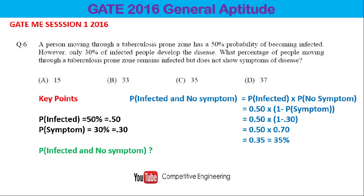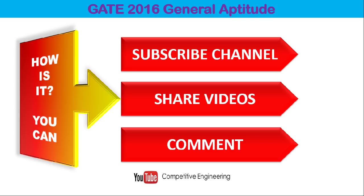So the probability of being infected and showing no symptom is 35%, making the correct answer option C. This is a GATE 2016 basic probability question. You can watch our probability lecture for a better understanding. Thank you for watching — please subscribe, share the videos, and comment your questions. We will try to solve and upload answers within a limited time.